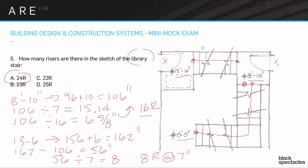One last quick point — I've seen this mistake from students many times: if you have stairs with three risers, you only have two treads. The number of treads is always one less than the number of risers. People frequently multiply the number of risers by the tread width when calculating the total run length, forgetting to subtract one tread. Keep that in mind.